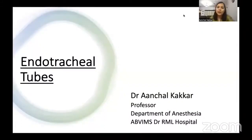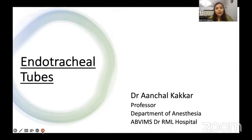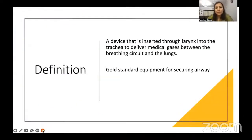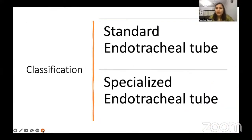I'm Dr. Angel Kakkar and I will be talking about endotracheal tubes. This is a very important topic for your viva voce — almost everybody is asked about endotracheal tubes, whether a normal PVC tube or a specialized endotracheal tube. By definition, an endotracheal tube is a device inserted through the larynx into the trachea to deliver medical gases. It is a connection between the breathing circuit and the lungs, and to date it is the only gold standard equipment for securing airway. It is classified into two types: standard and specialized.